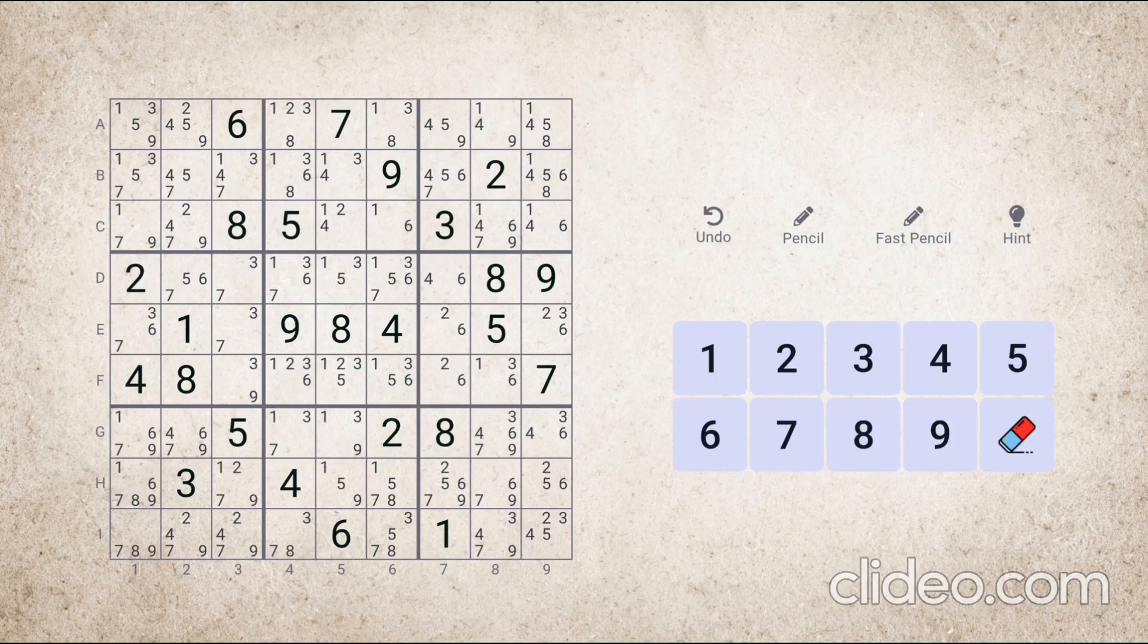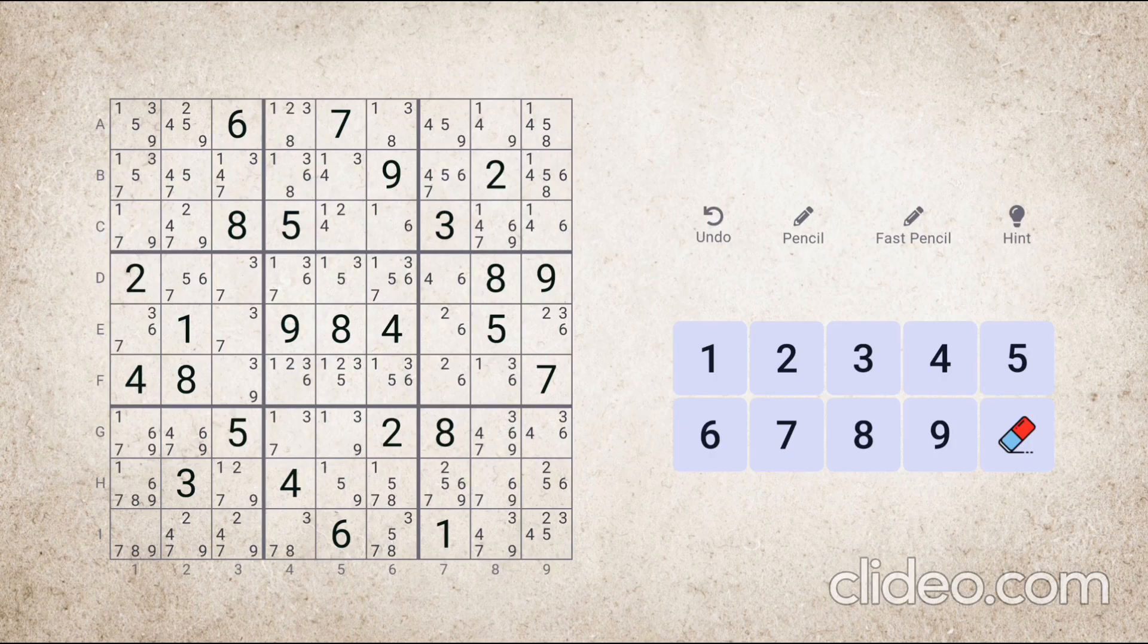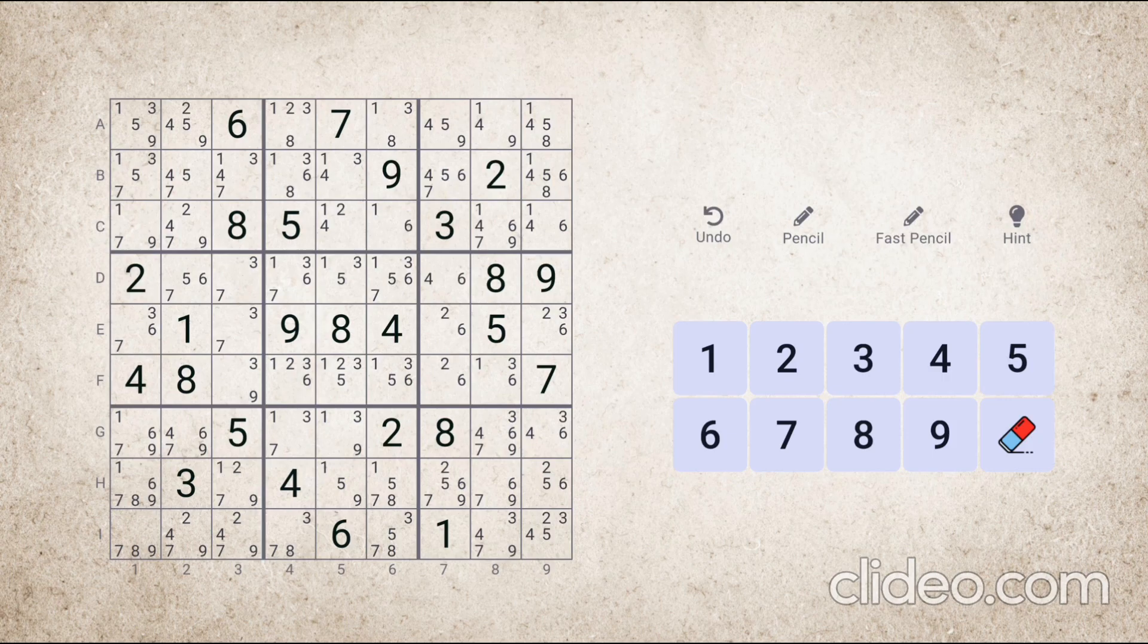So the first type says that if in a block, all the nodes for a number are in a single row or a single column, then this number cannot be placed in that row or column outside this block.